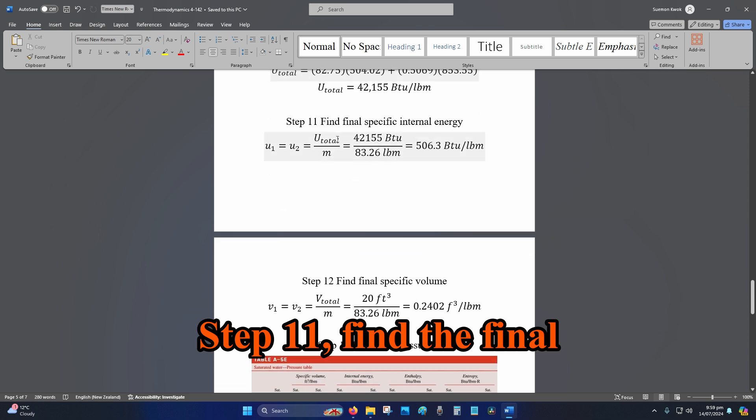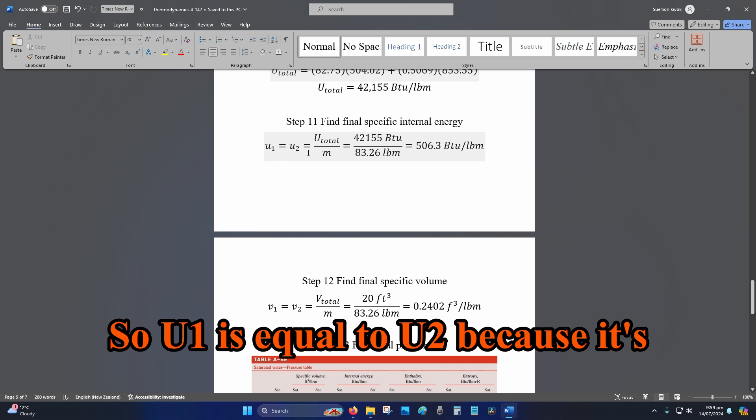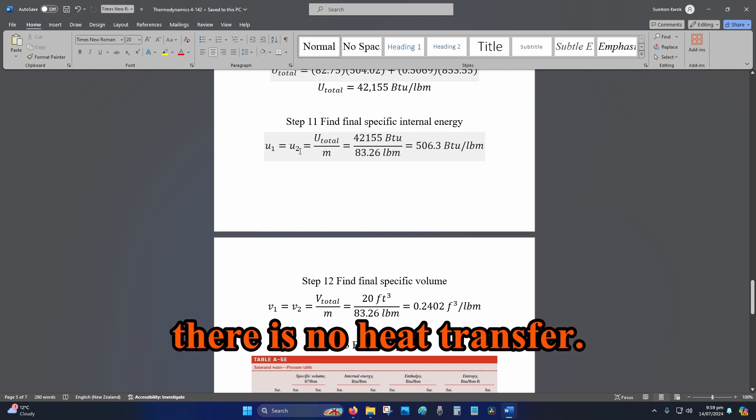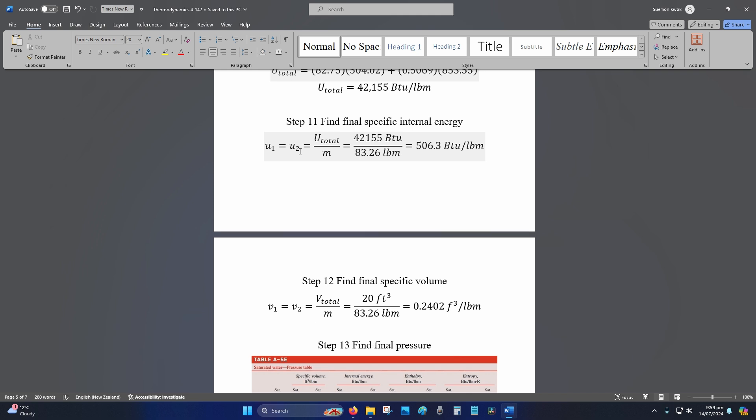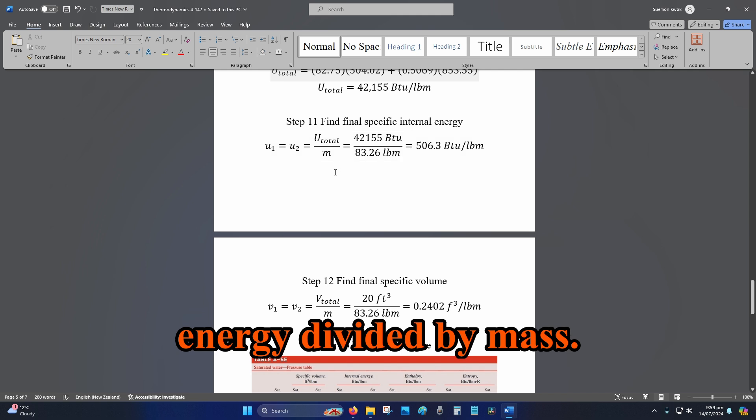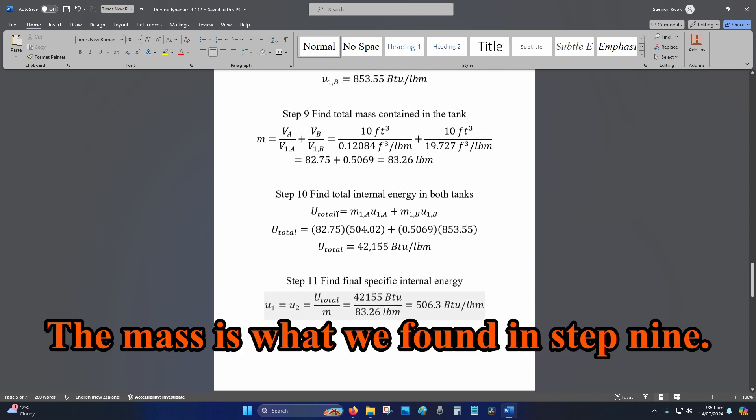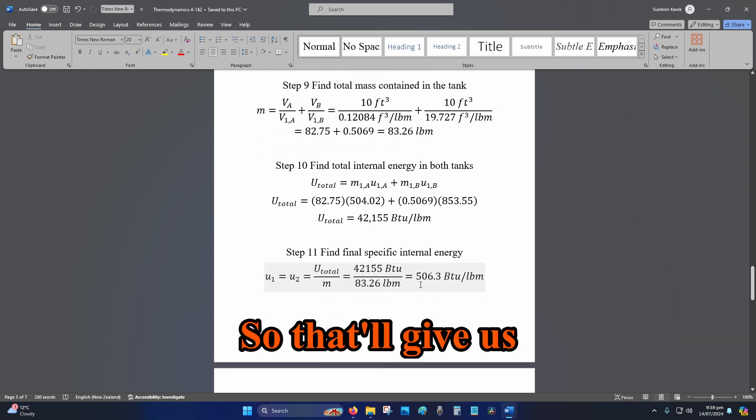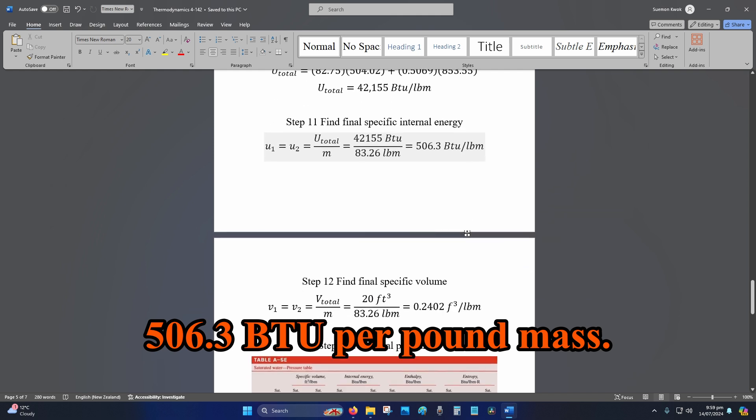Step 11, find the final specific internal energy. So, U1 is equal to U2 because it's adiabatic. Because there is no heat transfer. So, temperature is equal to 0. Okay. So, the total internal energy divided by mass. So, we found that in step 10. The mass is what we found in step 9. So, that will give us 506.3 BTU per pound mass.